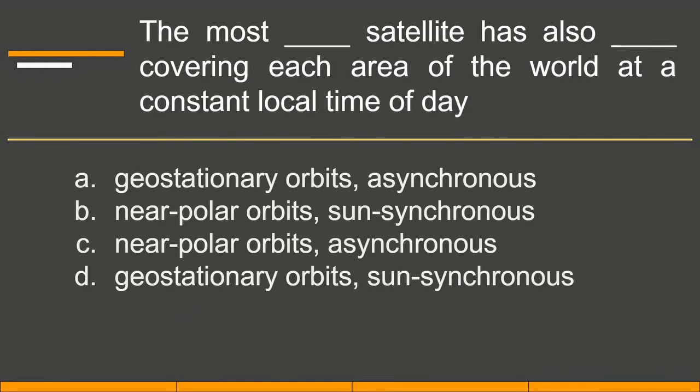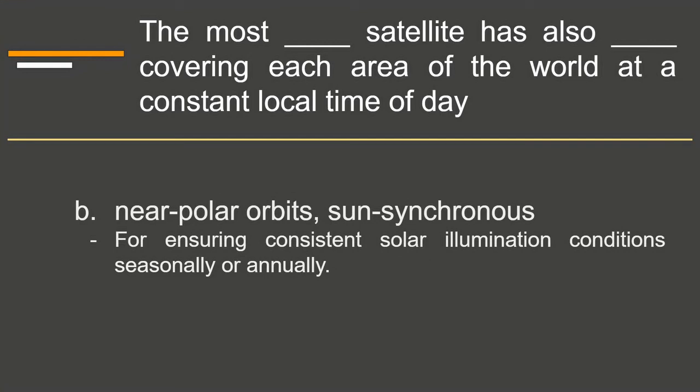The most blank satellite has also blank covering each area of the world at the constant local time of day. The most near-polar orbit satellite has also sun-synchronous orbit, covering each area of the world at the constant local time of day for ensuring constant solar illumination conditions seasonally or annually.